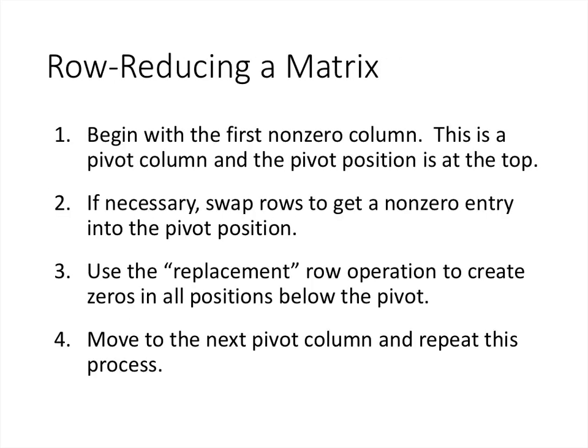Here is the basic row reduction process. Begin with the first non-zero column — that's a pivot column and the pivot position is at the top. If there isn't already a non-zero number there, swap rows to get a non-zero into that pivot position. Then use the replacement operation to create zeros in all positions below that pivot. Move on to the next pivot column and repeat this process.